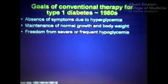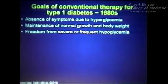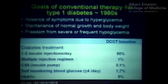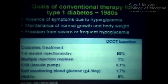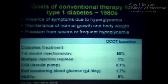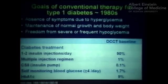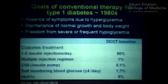We have the mantra of glucose control being important, but it really wasn't long ago when we didn't have solid evidence of this. Treatment approaches for type 1 diabetes were focused on avoiding symptoms of uncontrolled hyperglycemia, maintaining normal growth and body weight, and avoiding severe or frequent hypoglycemia. Most patients were receiving one or two injections of insulin a day, very few were using multiple injection regimens or insulin pumps, glucose monitoring was infrequent, and the average hemoglobin A1C was around 9%, based on DCCT baseline data.